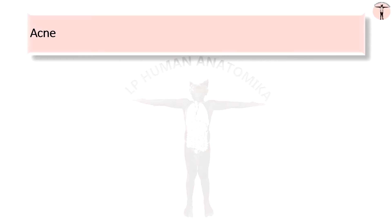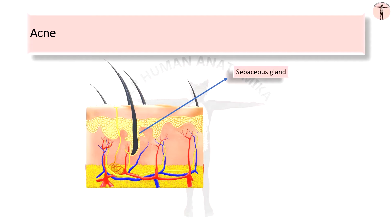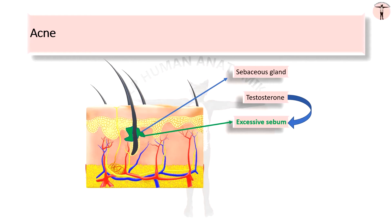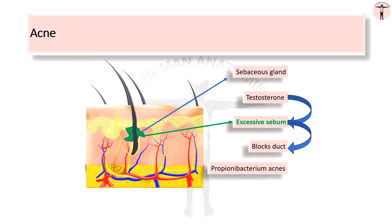Another clinical application is acne. In the skin, the holocrine sebaceous glands are the primary structure involved in the common form of acne, or acne vulgaris. A surge of the steroid hormone testosterone, occurring in both genders at puberty, triggers excessive holocrine secretion of sebum and keratin, which frequently leads to blocked ducts within the gland. Activity of the abnormal skin bacterium Propionibacterium acnes within the blocked duct commonly produces localized inflammation.